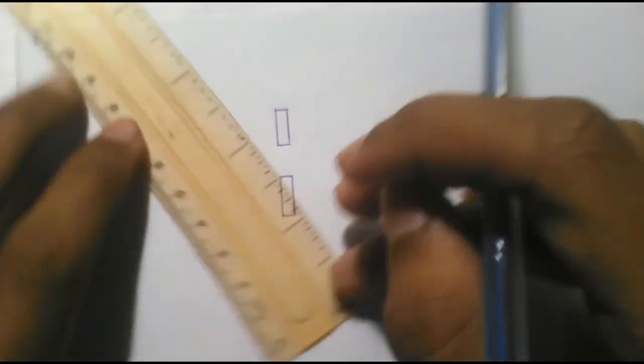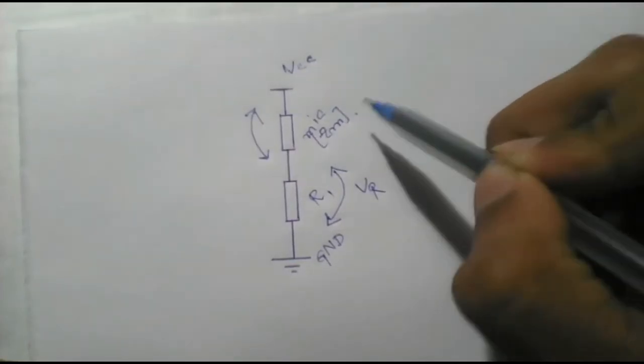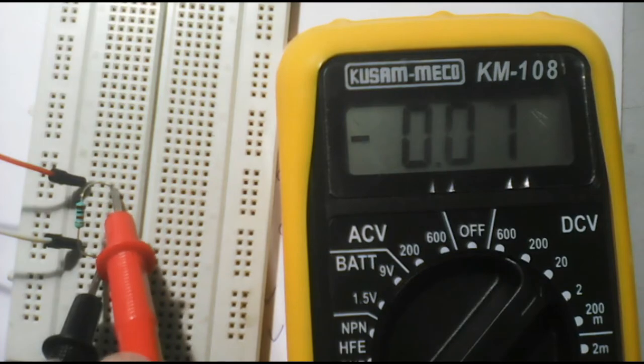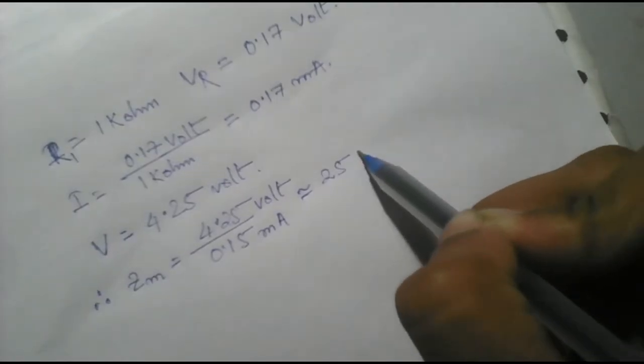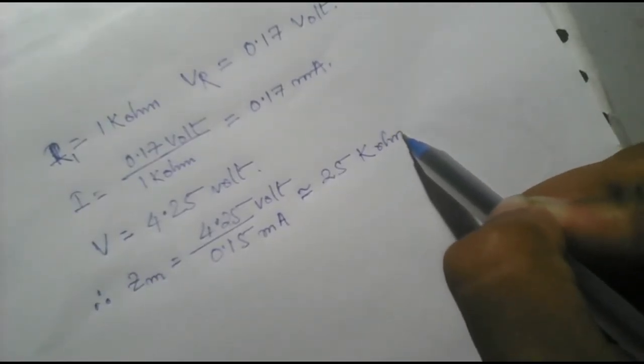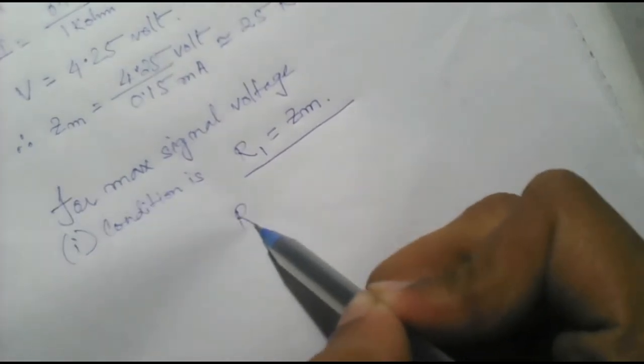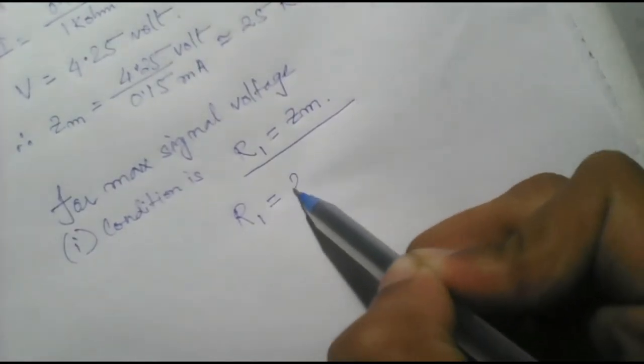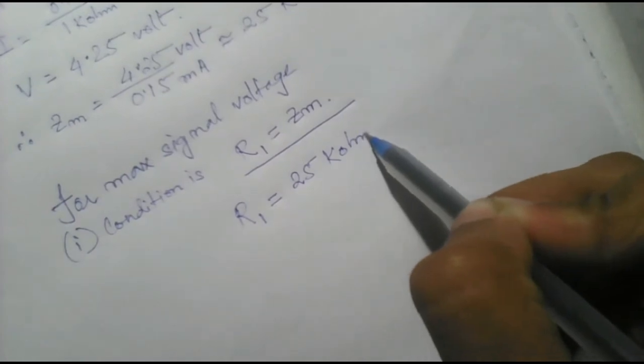Now let's take a look at its IV characteristic of the device. It has a resistance around 25 kOhm. And for maximum peak-to-peak voltage signal output, the condition is to match an equivalent resistance in series with it.